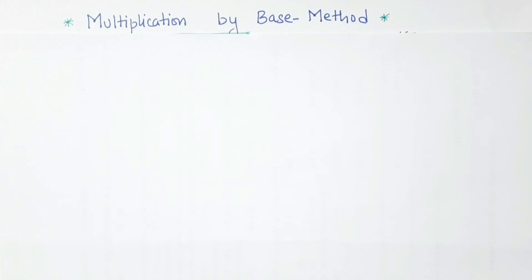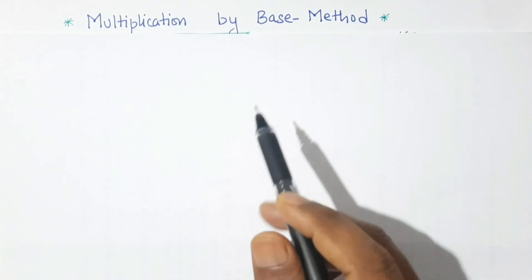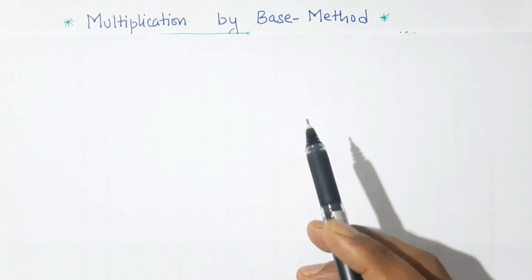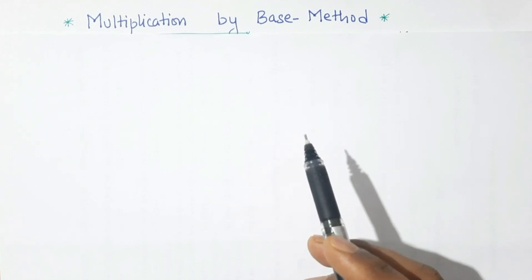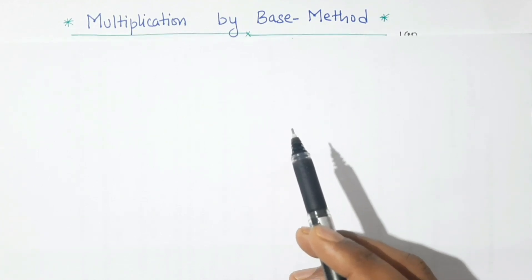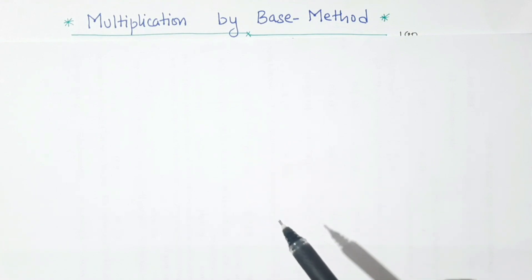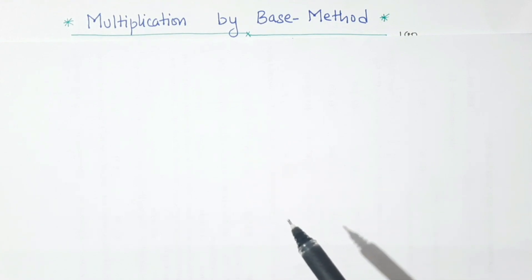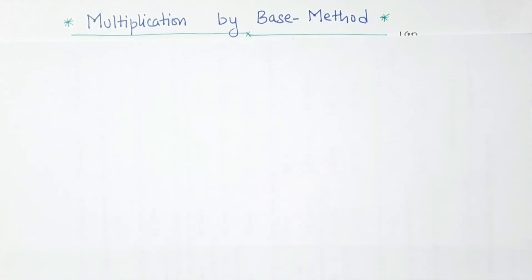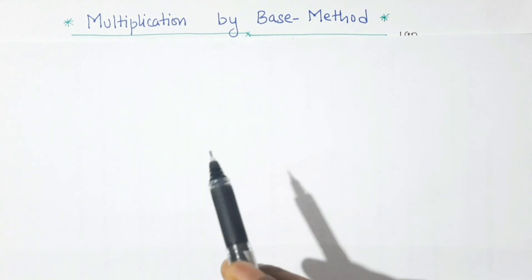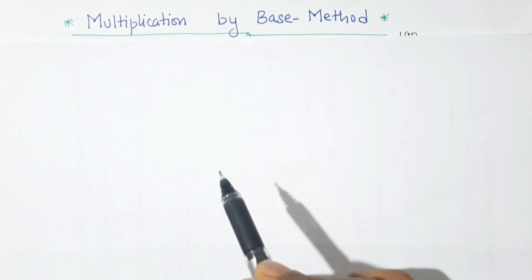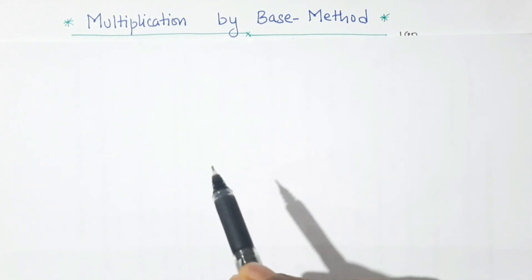Hello and welcome to our math class. This is the second part on the topic multiplication by base method. In the first part we learned to multiply a number having a base of 100, 200, 300, and so on within a few seconds. In this video we are taking a base other than a multiple of 100.